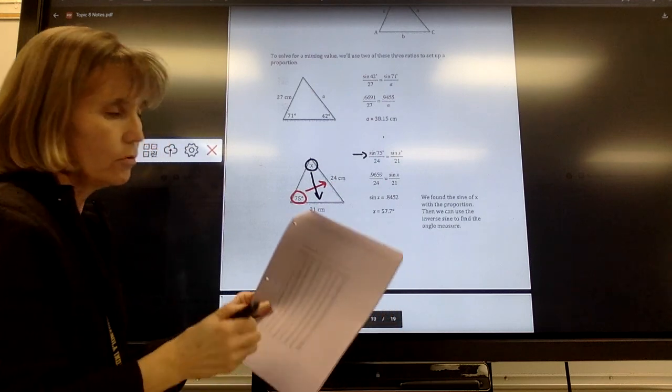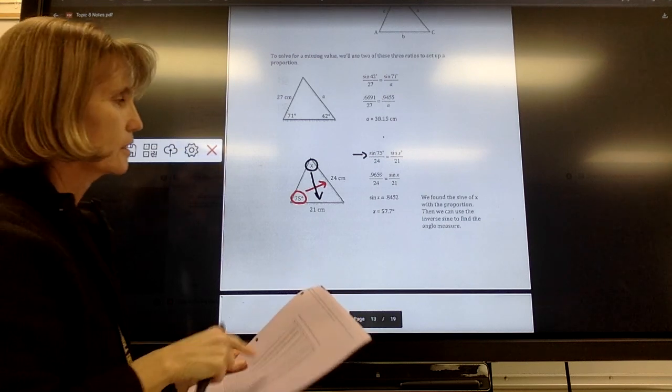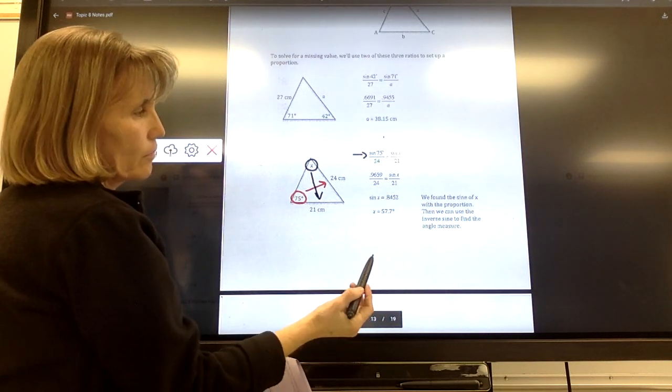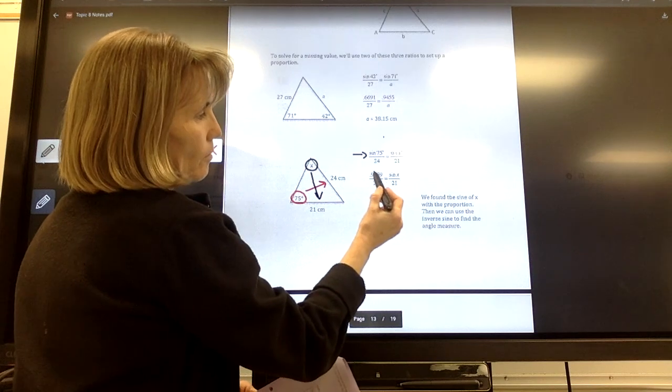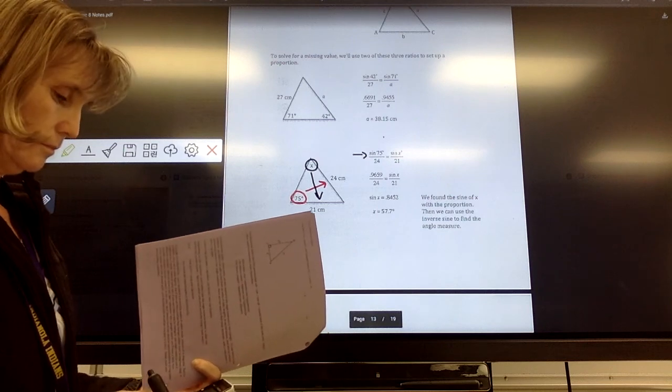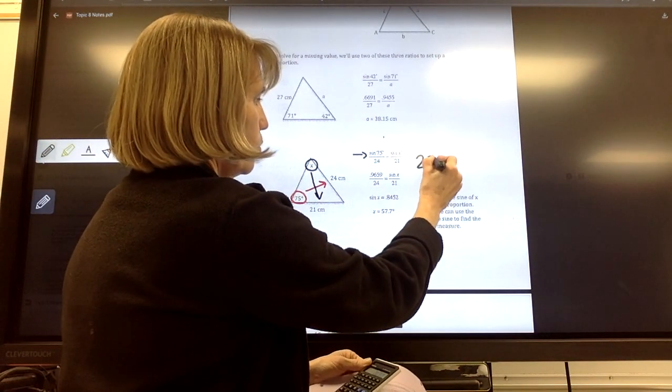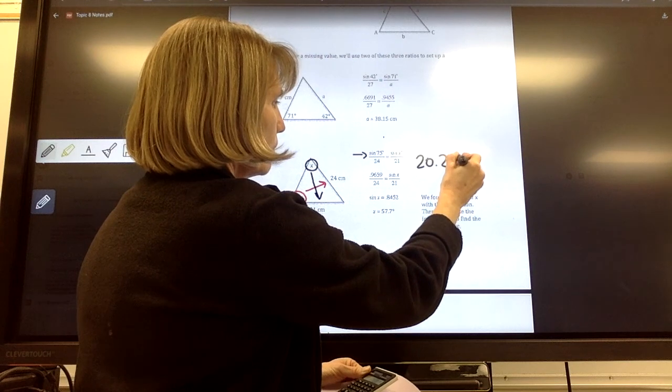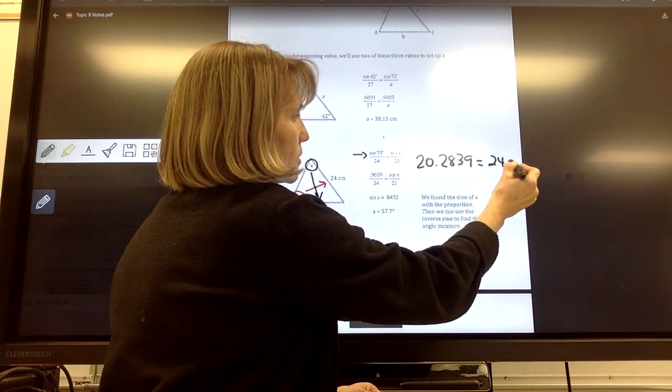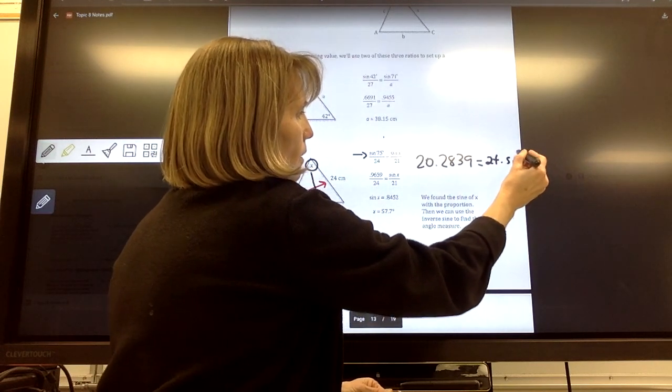I can go to my table, and I can find the decimal for the sine of 75. So I'm going to look that up, and I get 0.9659, which is what they have here. And I'm going to do the cross products. So in this case, I'm going to take 0.9659 times 21, it equals, and I'm going to end up with this 20.2839 equals, when I go this way, I'm going to have 24 times the sine of x.